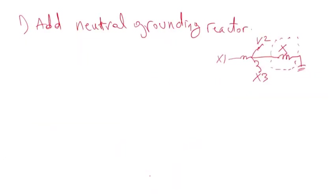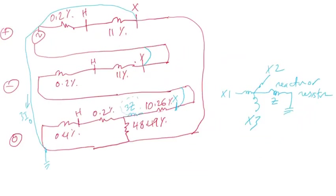So option one: add a neutral grounding reactor. Basically you would go to the low voltage side — you have X1 bushing, X2, X3 — and in the neutral ground there is a reactor. I stated that this reactance would only impact the zero sequence impedance calculation. So if you go back to this diagram, you would recalculate the zero sequence impedance and just add three times the reactance we are looking for.